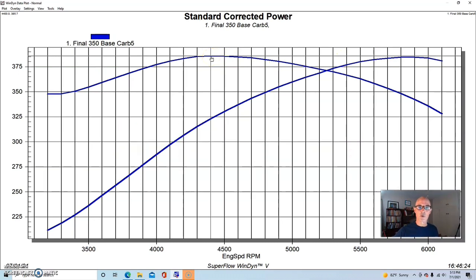So the combination worked out fairly well even in carburetor trim, and it had good torque which we would expect from a dual plane combination, and it made decent power out at the top. We ran out to 6100 RPM.